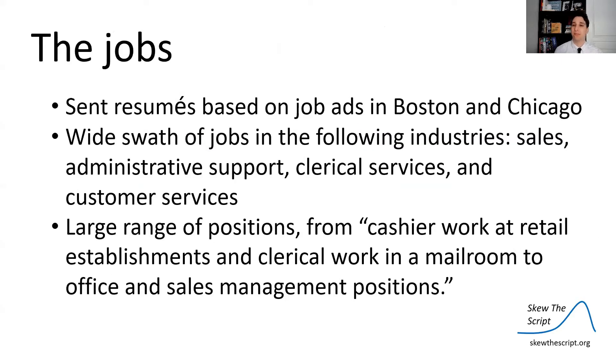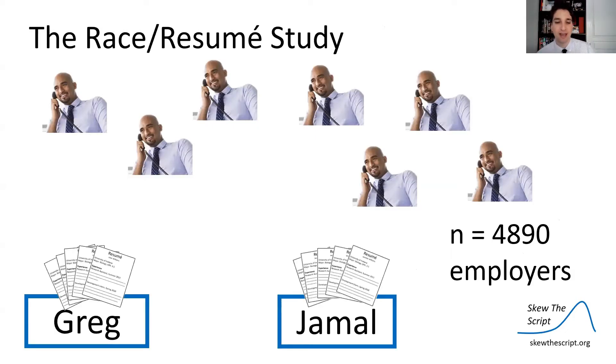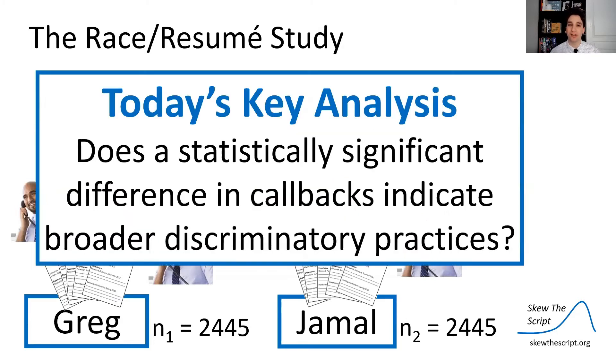They sent the resumes based on job ads in Boston and Chicago. So people posted in newspapers, hey, we're hiring, and they sent the resumes to them. There's a wide swath of jobs in various industries and a wide variety of position levels. And they contacted 4,890 employers with resumes. And to half they assigned resumes with commonly white names, half assigned resumes with commonly black names. And they measured which group got proportionally more callbacks from employers. So today's key analysis will be, does a statistically significant difference in callbacks indicate if there are broader discriminatory practices happening?